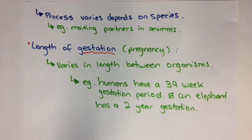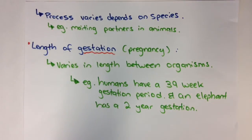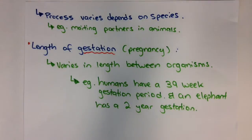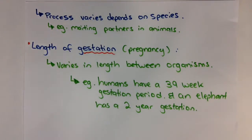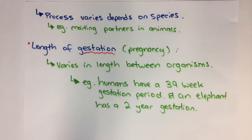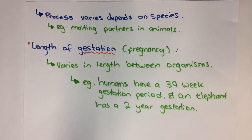Let's talk about the gestational period — that's how long the pregnancy lasts from fertilization all the way to giving birth. For a human that takes about 39 or 40 weeks, whereas for an elephant it can be up to about two years. The general rule is that the larger the animal, the longer the gestational period.